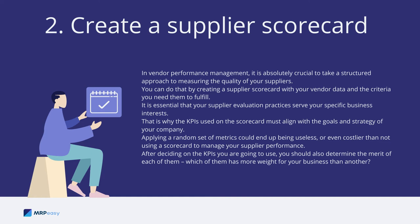Tip 2: Create a supplier scorecard. In vendor performance management, it is absolutely crucial to take a structured approach to measuring the quality of your suppliers. You can do that by creating a supplier scorecard with your vendor data and the criteria you need them to fulfill. The KPIs used on the scorecard must align with the goals and strategy of your company. After deciding on the KPIs, you should also determine the merit of each — which ones carry more weight for your business than others.